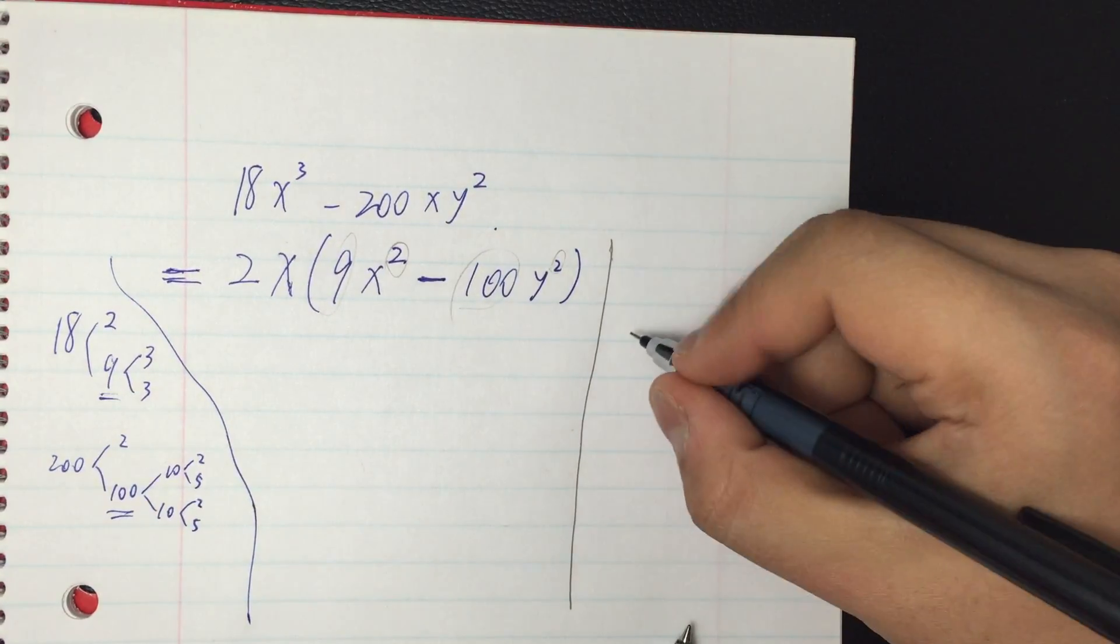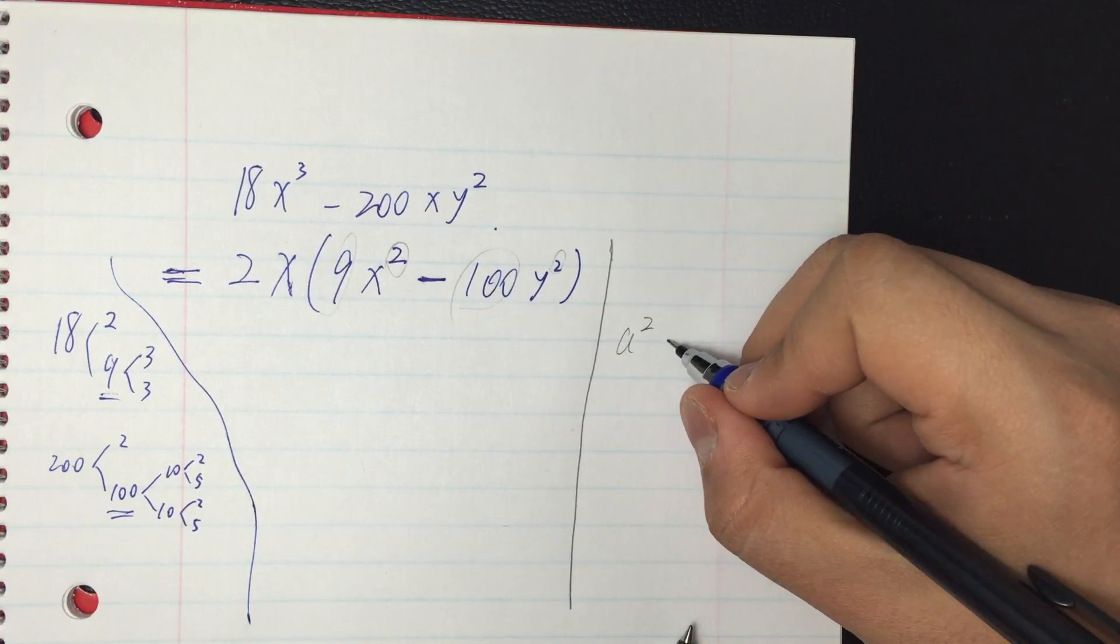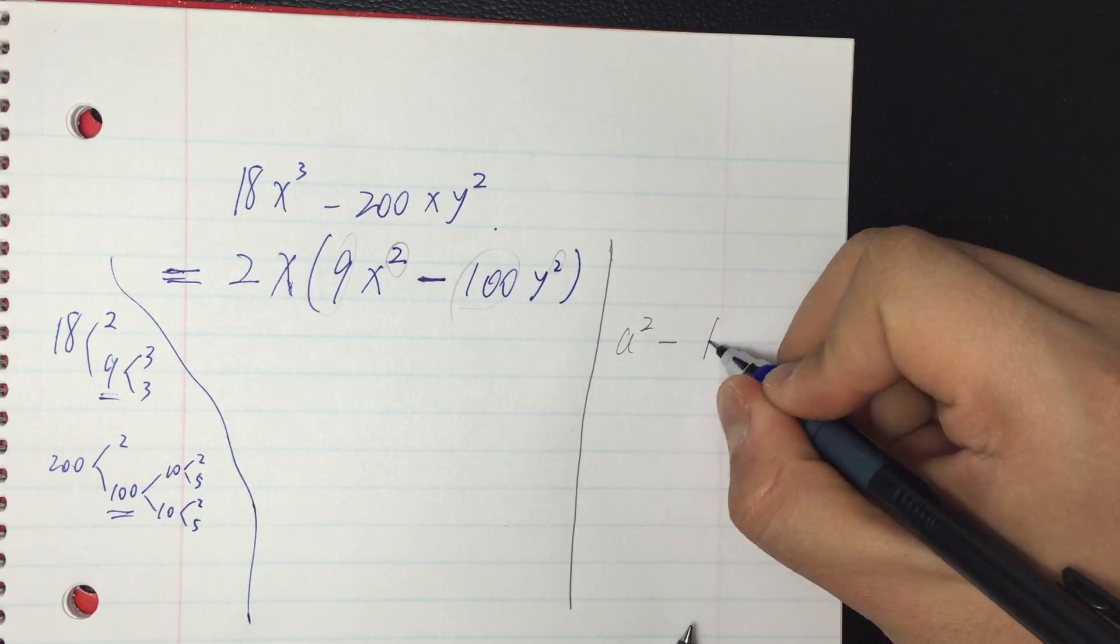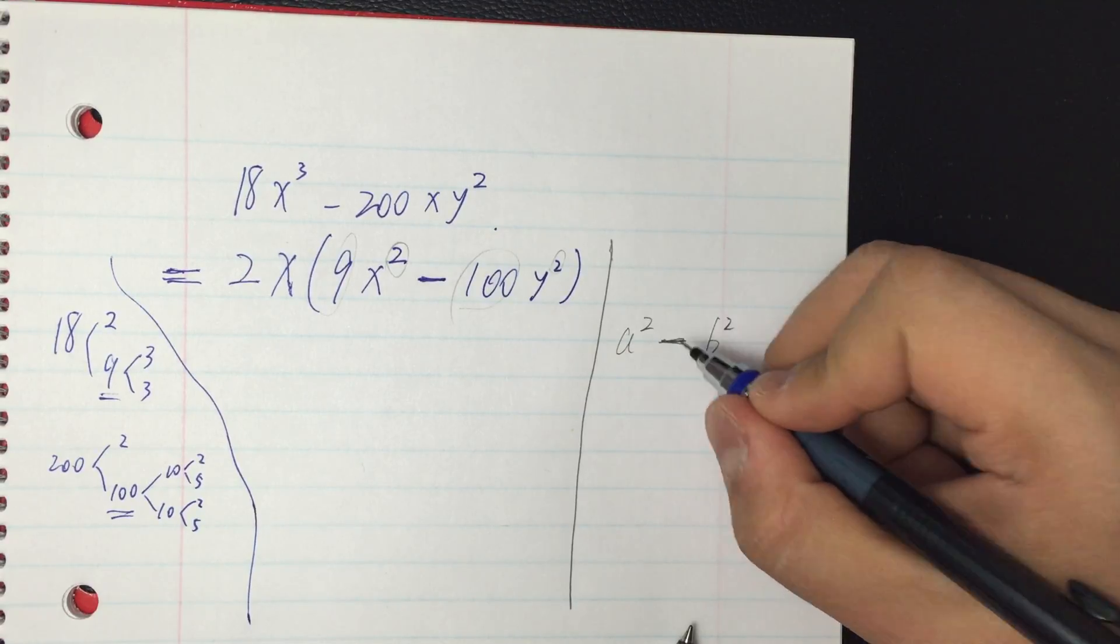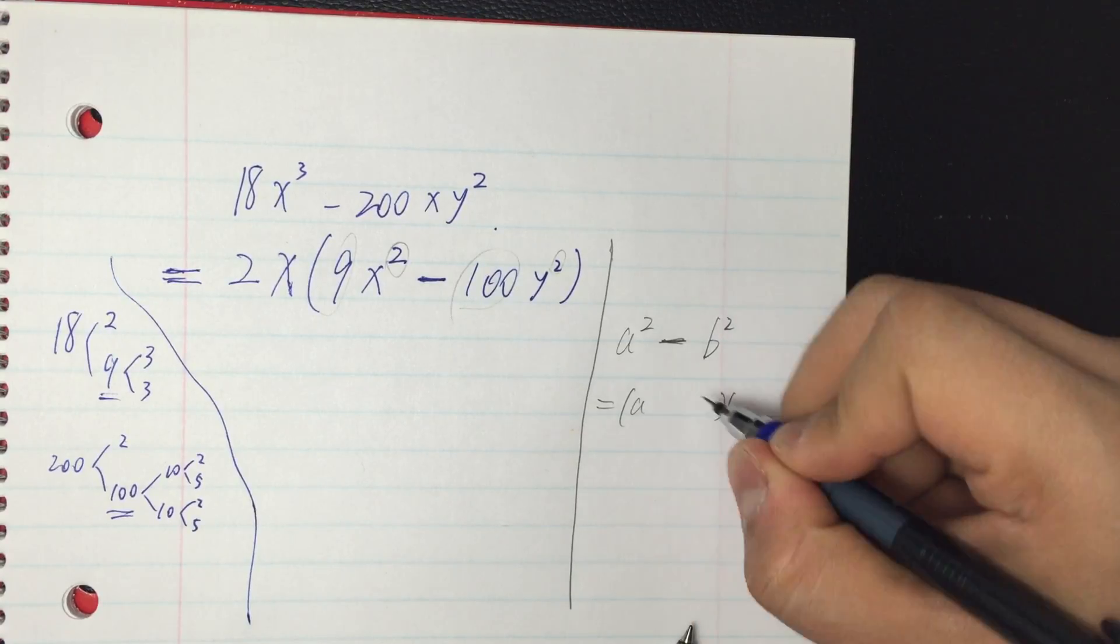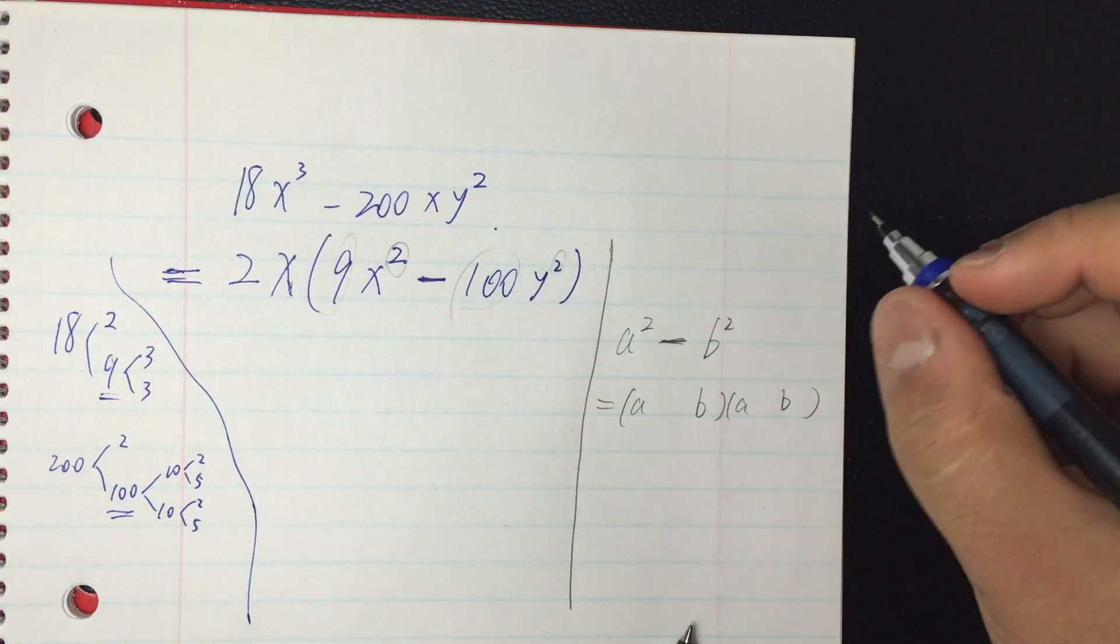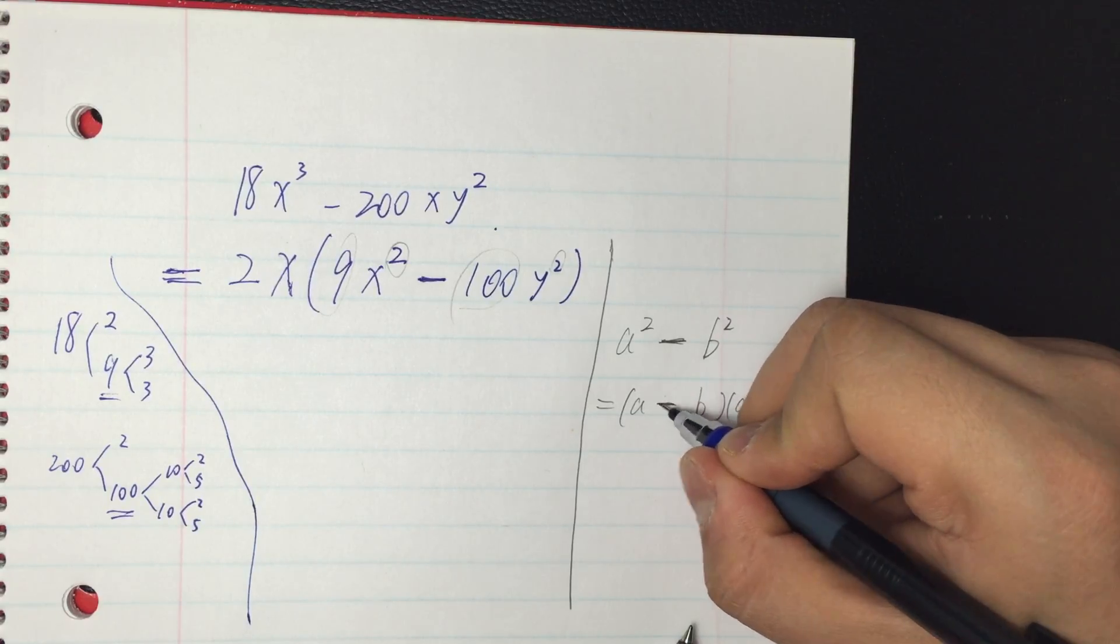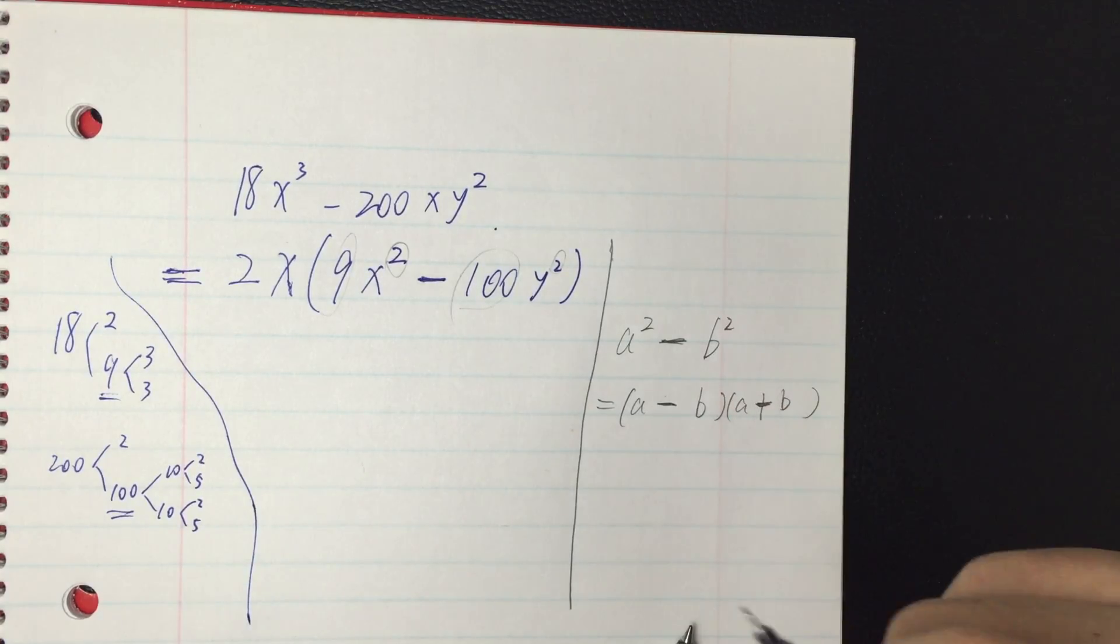So the formula we are using is called the difference of squares. We're finding the square of a and the square of b. We're given these two things, and we're taking the difference of them. We just write down the bases a and b using the alternating signs to connect them, minus and plus.